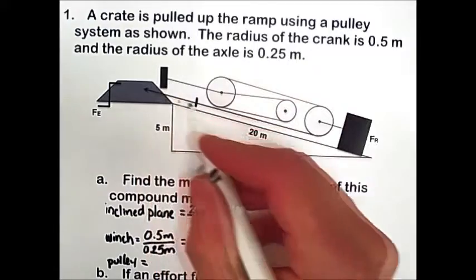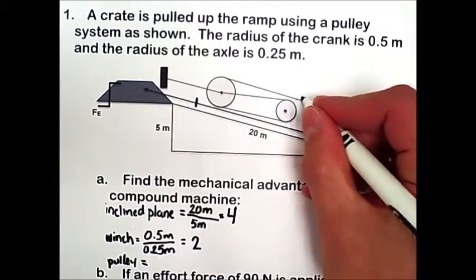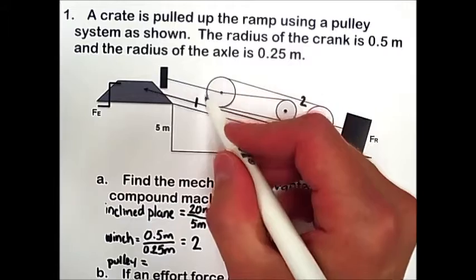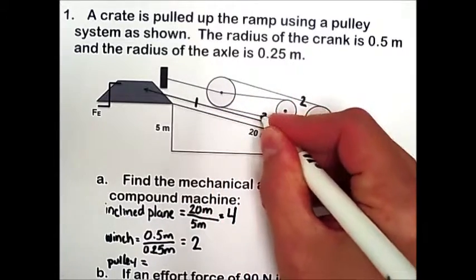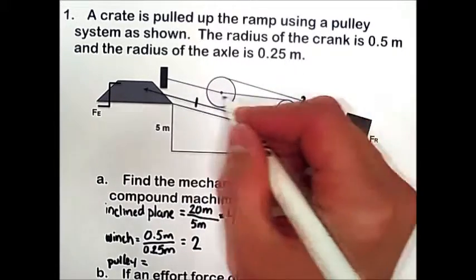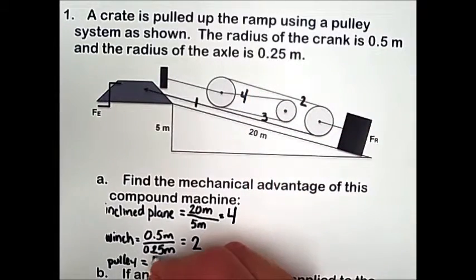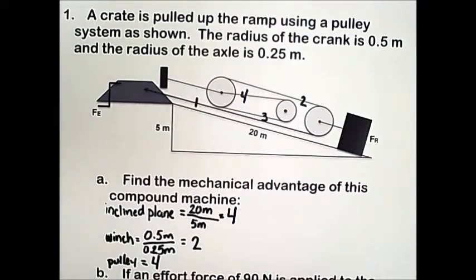So that will count as one strand. We round the first pulley, we have our second strand. We round the second pulley, we have our third strand. And we round the third pulley, we have our fourth strand. So the mechanical advantage of the pulley system is 4.